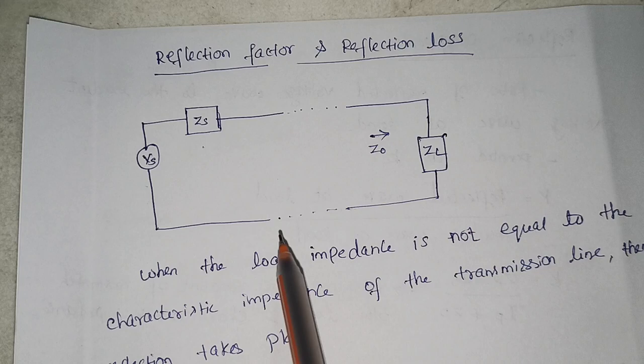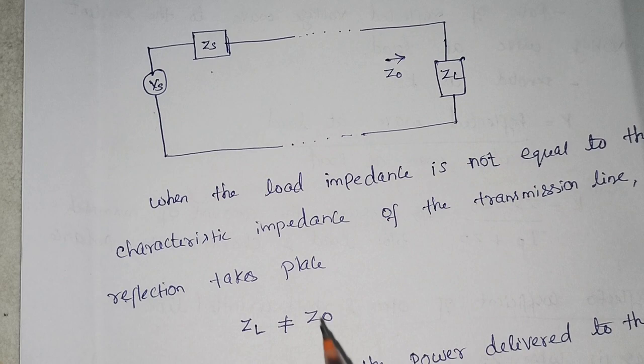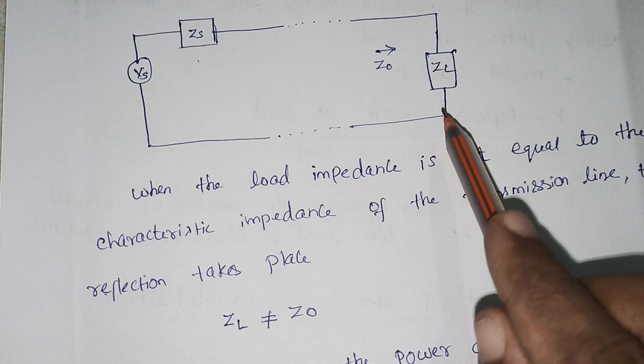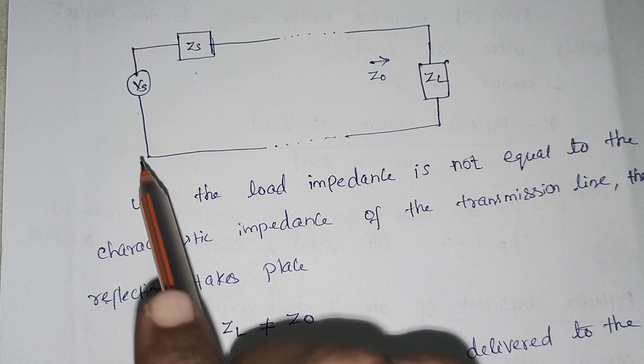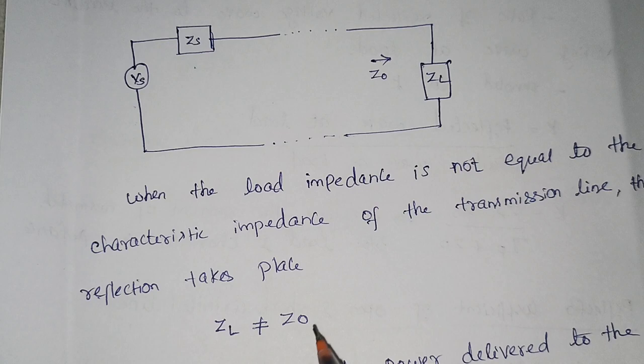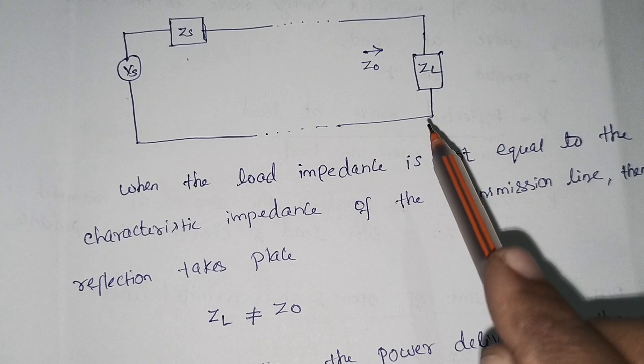Now in a normal transmission line, whenever the condition ZL is not equal to Z0 persists, there will be reflection taking place from the load towards the source. In the normal scenario, signals will be transmitted only from the source towards the load. But whenever the load impedance is not equal to the characteristic impedance, a part of the transmitted signal will be reflected back from the load towards the source.